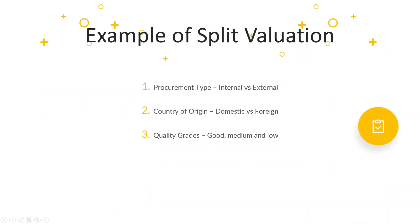Here are a few examples of split valuation. First, procurement type: a material can be either manufactured internally — in-house production — or procured externally from a third-party vendor. The prices for an internally manufactured variant will differ from one procured externally. Second, country of origin: a material procured domestically will have a different price compared to the same material sourced from a foreign vendor. Third, quality grades: a material might be of different qualities such as good, medium and low, and depending upon the quality, the value of the material can change.